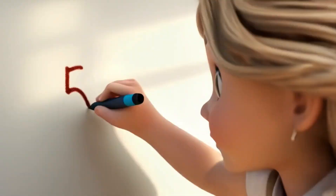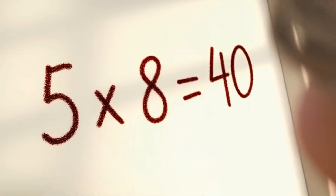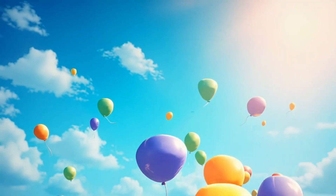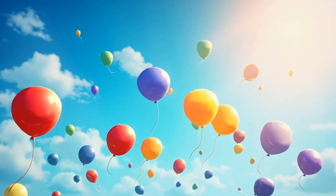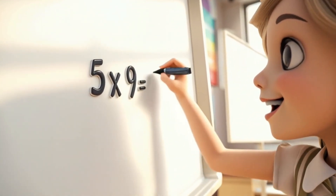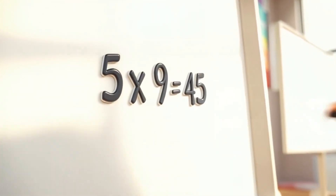Five times eight is forty. Forty balloons rise up so shortly. Five times nine is forty-five. Forty-five stars in the night sky thrive.